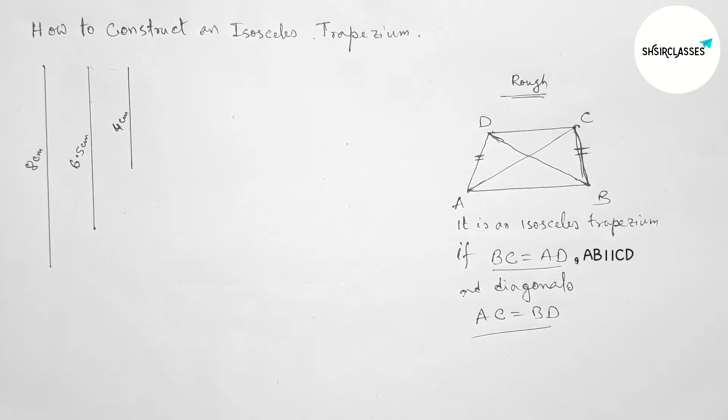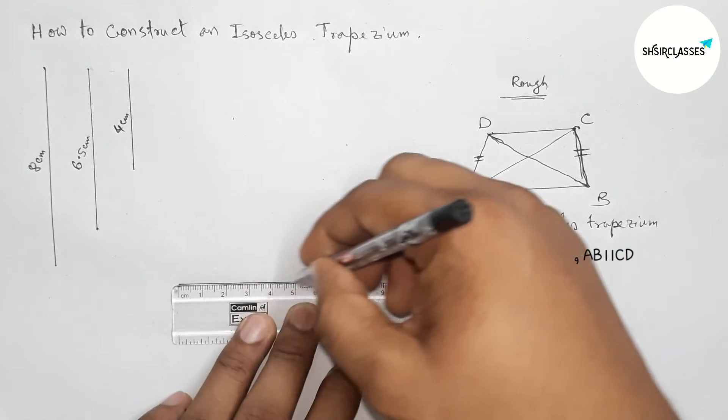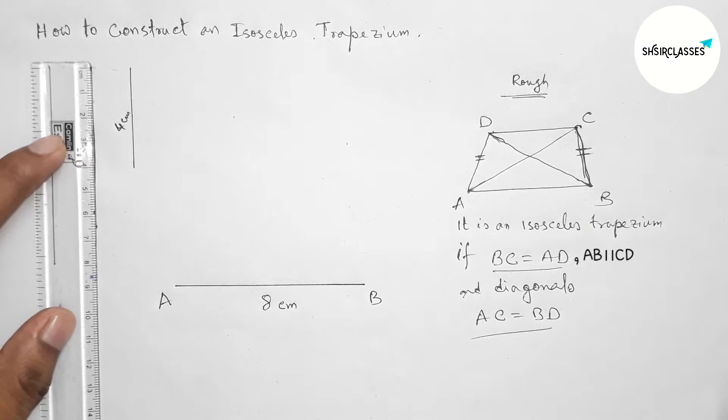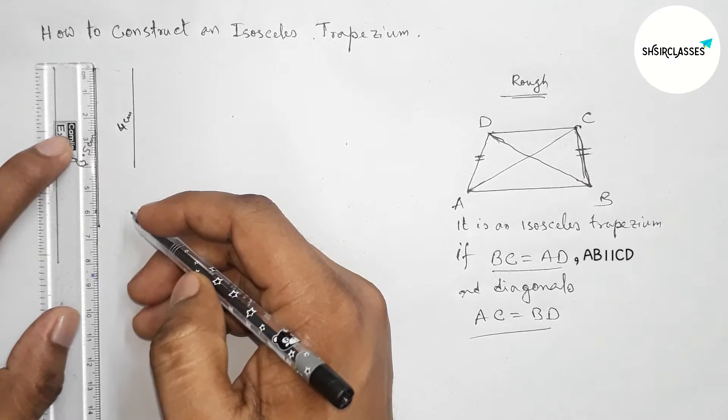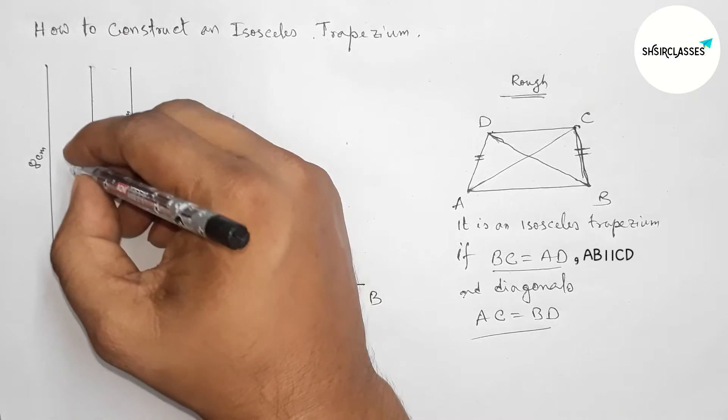So now I am going to construct this isosceles trapezium. So first drawing here a line segment of length 8 centimeters, so AB, this is 8 centimeters. Now we have to increase this line up to 7.5 centimeters.